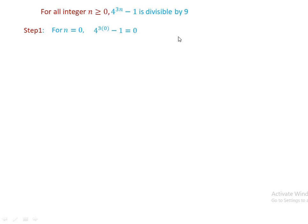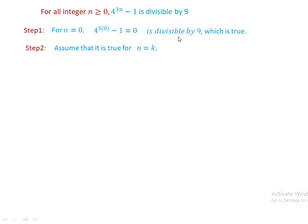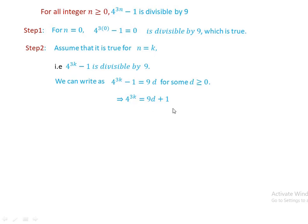1 minus 1 is 0, and 0 is divisible by 9. Step 2: we assume it is true for n equal to k. This implies that 4 to the power of 3k minus 1 is divisible by 9, which means for some integer d greater than or equal to 0, by rearranging, 4 to the power of 3k is equal to 9d plus 1.